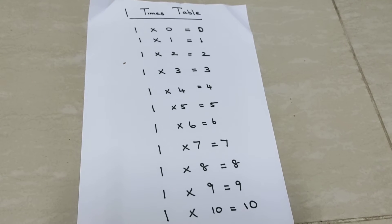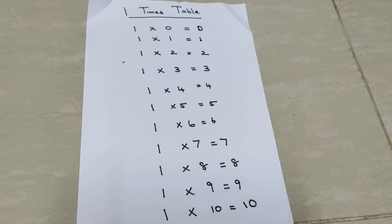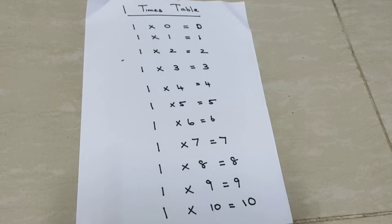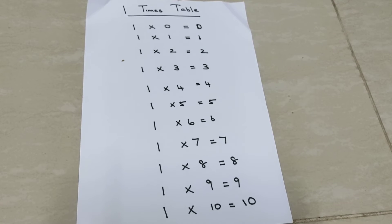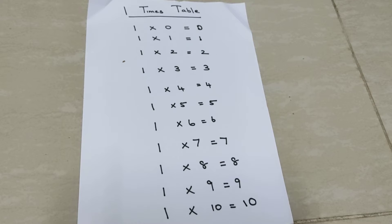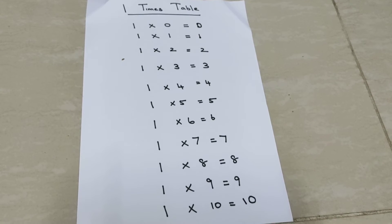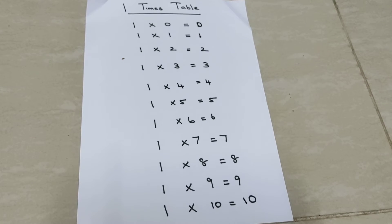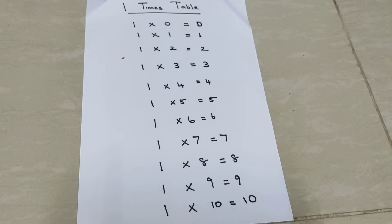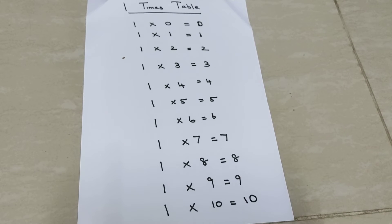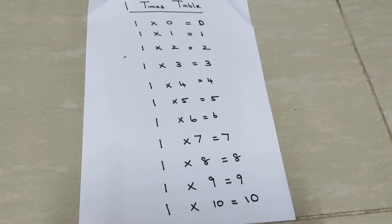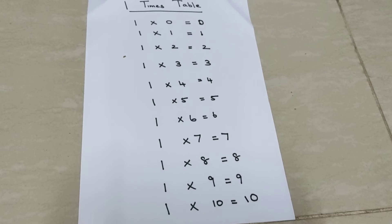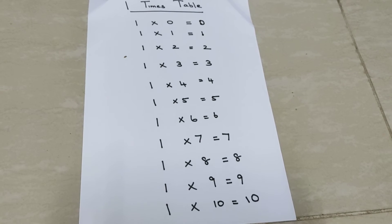1 times table. 1 zeros are 0, 1 ones are 1, 1 twos are 2, 1 threes are 3, 1 fours are 4, 1 fives are 5, 1 sixes are 6, 1 sevens are 7, 1 eights are 8, 1 nines are 9, 1 tens are 10, 1 zeros are 0.